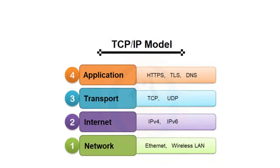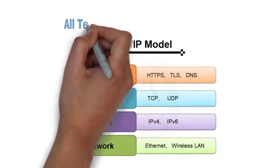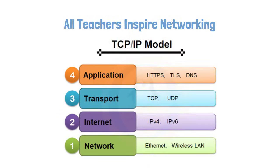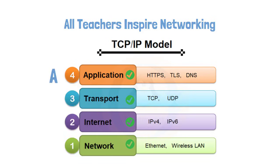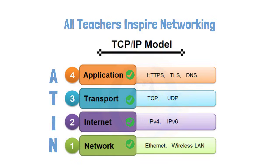Before we go, here's an easy way to remember the four layers of the TCP/IP model: 'All Teachers Inspire Networking' — Application, Transport, Internet, Network Interface. Just remember that phrase and you'll always have the TCP/IP layers in the right order. And if you like acronyms instead, think A-T-I-N: Application, Transport, Internet, Network Interface — like a fast train that connects you everywhere online.